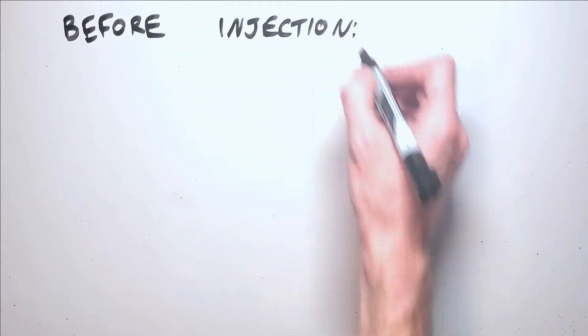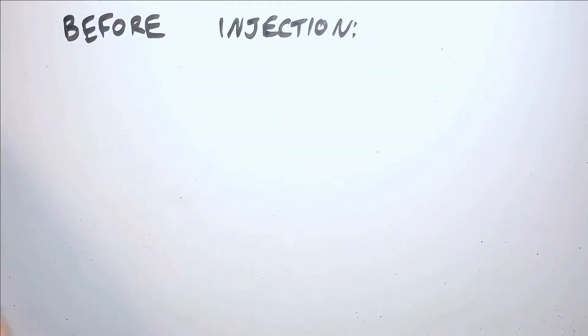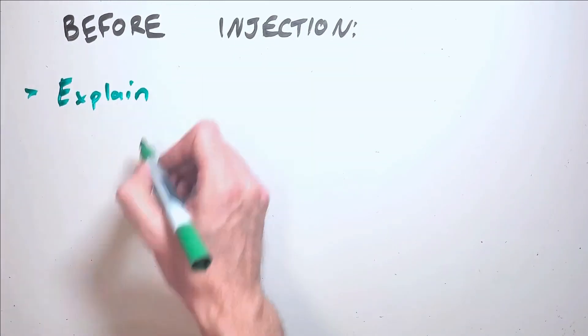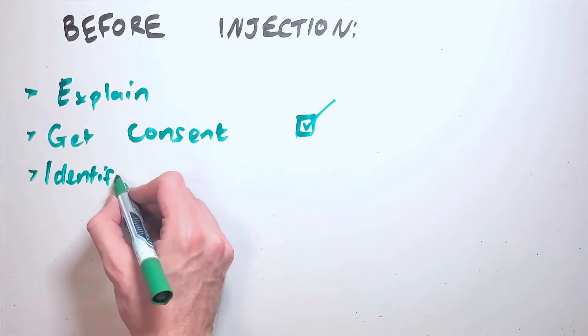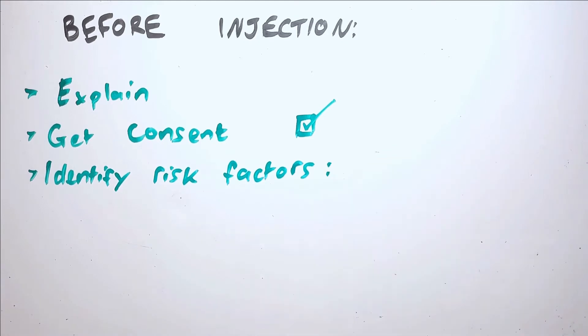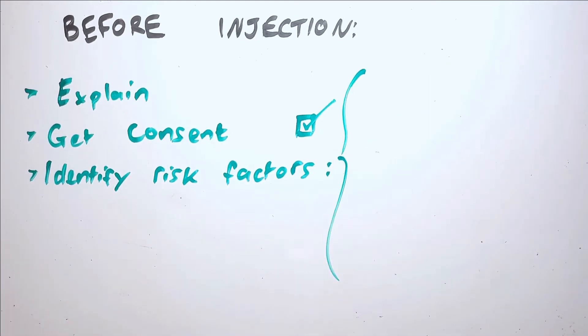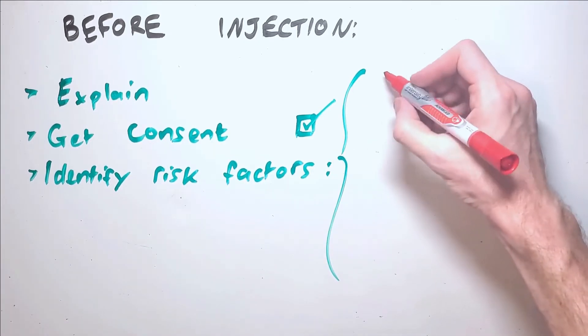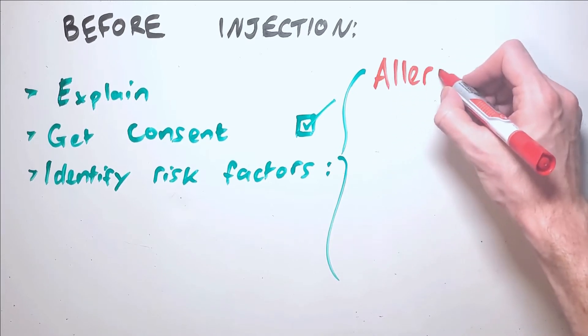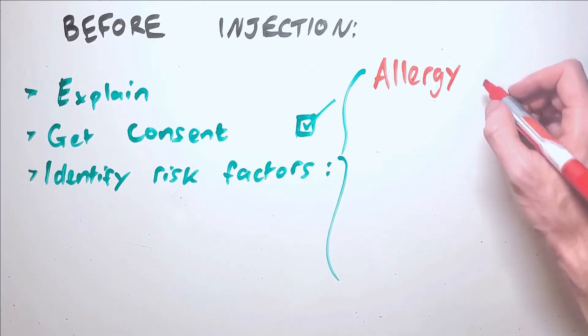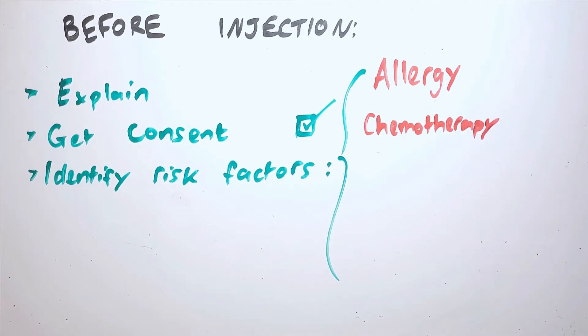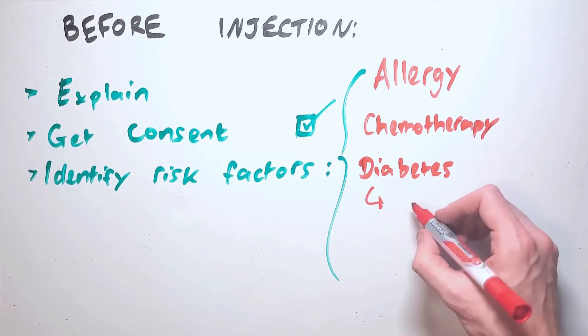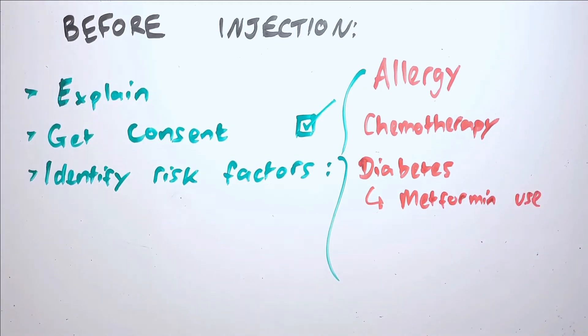Before obtaining IV access, the technologist should explain to the patient why they are getting contrast, obtain consent, and identify if the patient has any risk factors which may contraindicate the use of contrast. Those risk factors could be whether the patient has an allergy to contrast, if the patient has two or more other anaphylactic type allergies or has had a contrast reaction in the past, if the patient is currently on chemotherapy, if the patient has diabetes or if they are taking metformin.